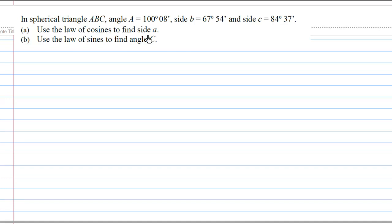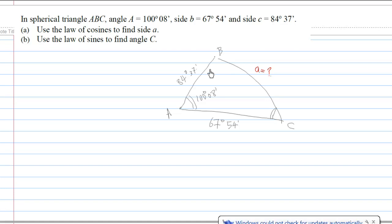Let's try to draw the triangle first. Here is a Spherical Triangle ABC, where side C opposite angle C is 84 degrees 37 minutes, and side B opposite angle B is 67 degrees 54 minutes, and angle A is 100 degrees 8 minutes. We are going to find out what is the size of BC, which is side a here.